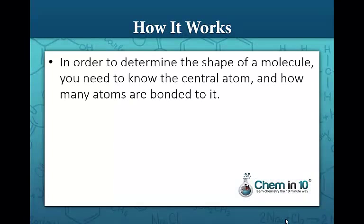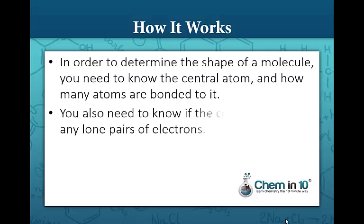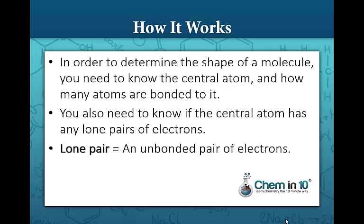This is how it works. In order to determine the shape of a molecule, you need to know the central atom and how many atoms are bonded to it. You also need to know if the central atom has any lone pairs. Remember that a lone pair is an unbonded pair of electrons.